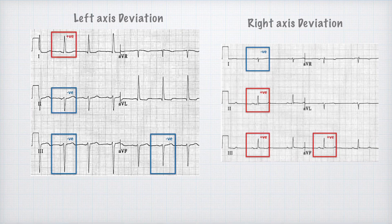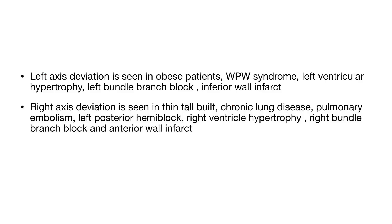Left axis deviation is usually seen in obese patient, WPW syndrome, left ventricular hypertrophy, left bundle branch block, inferior wall infarct. And right axis deviation is usually seen in thin tall built, chronic lung disease, pulmonary embolism, left posterior hemiblock, right ventricular hypertrophy, right bundle branch block, and anterior wall infarct.